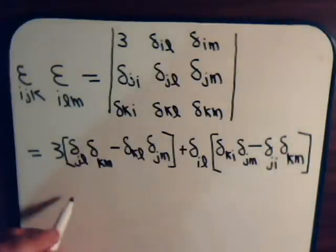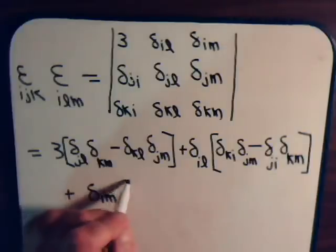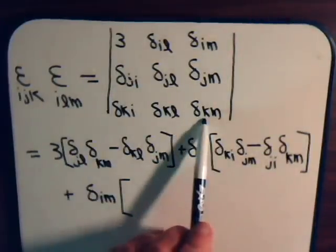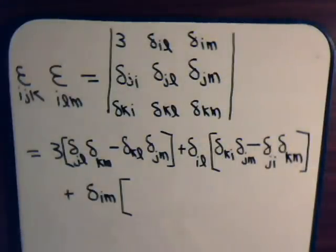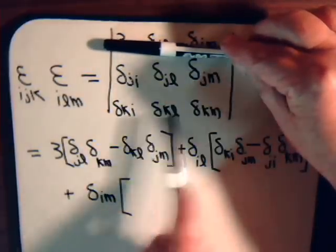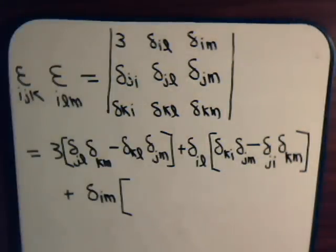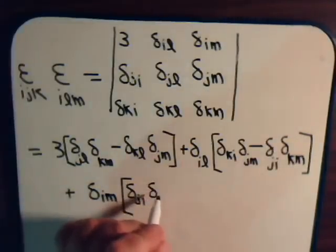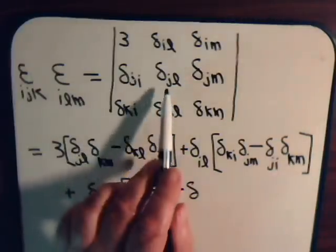And then for the next term, we will have plus delta_IM. Then we will have this times this minus this times this — let's make sure we do it correctly, covering the appropriate rows. So we'll have delta_JI * delta_KL minus delta_KI * delta_JL.